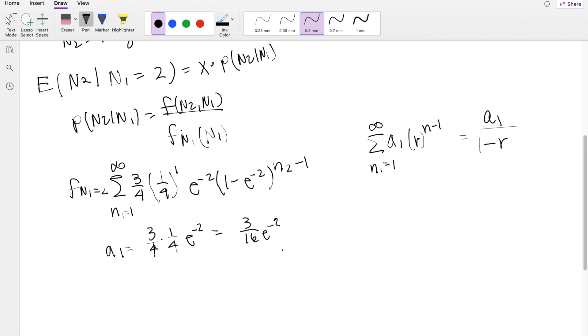And our rate here will be the things inside the N minus 1. In our case, it will be N2 minus 1, so it's this thing right here, that is going to be our rate, 1 minus e to the negative 2.